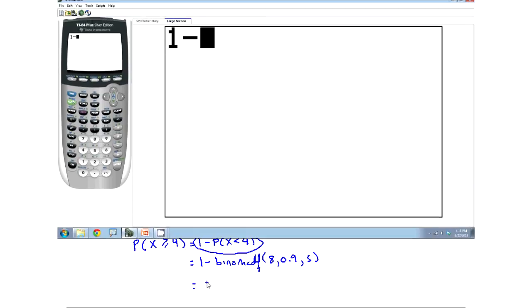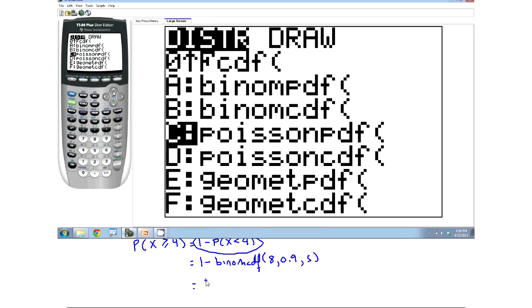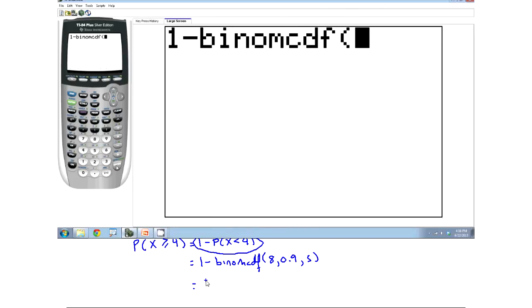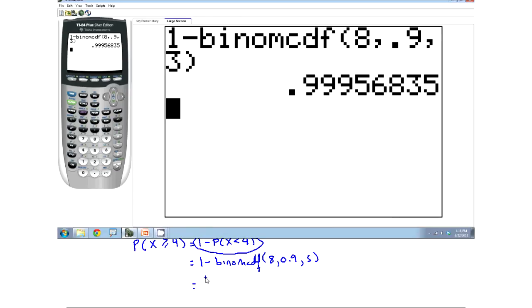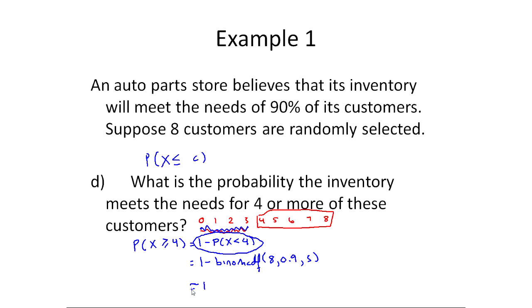And so when I go through and calculate this, the first thing I do, of course, is type by one minus. And then I go through the menu, I find the binomial CDF. Type in the eight comma the .9 comma the three, and end up with something very, very close to one. So I'll put approximately equals one here. So once again, the complement was able to help us out. You don't need the mathematical notation. This little drawing that takes you from zero up to the biggest possible value of x is very helpful.